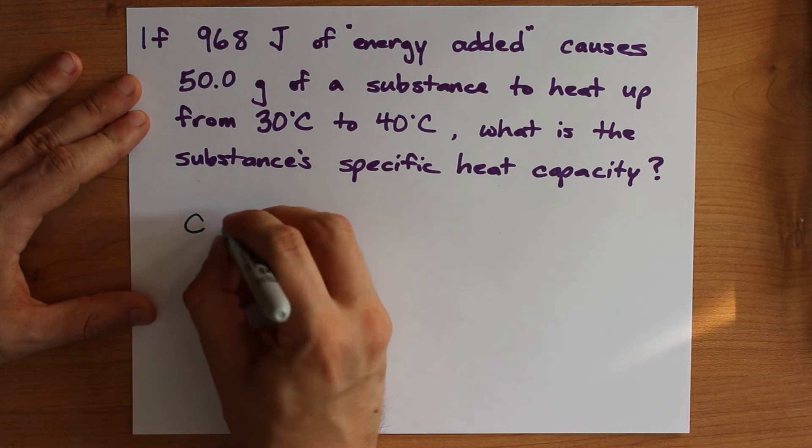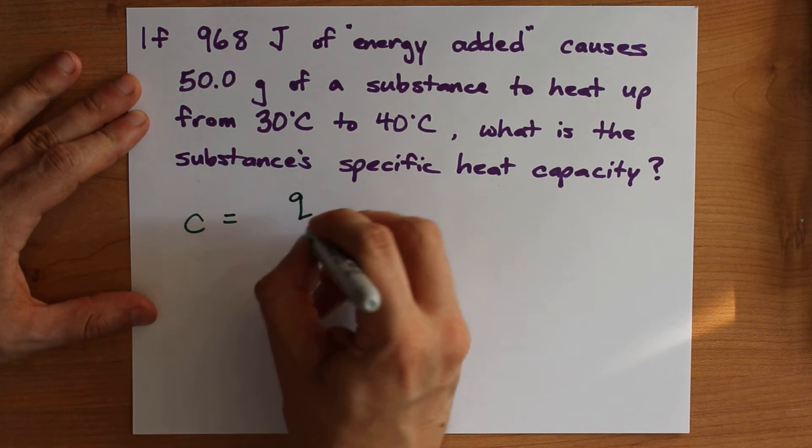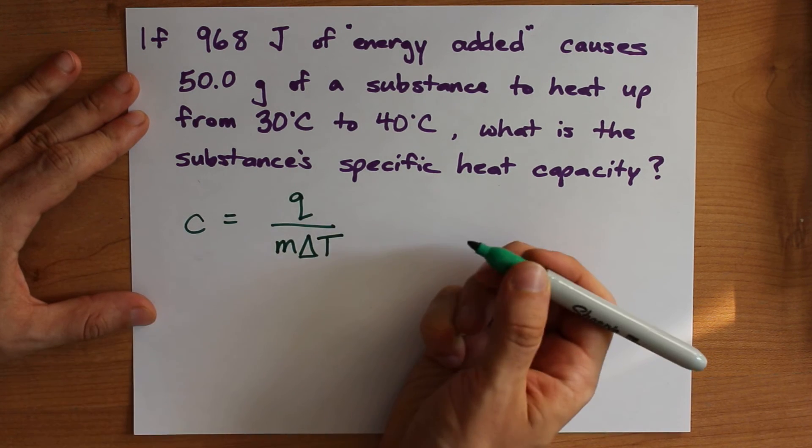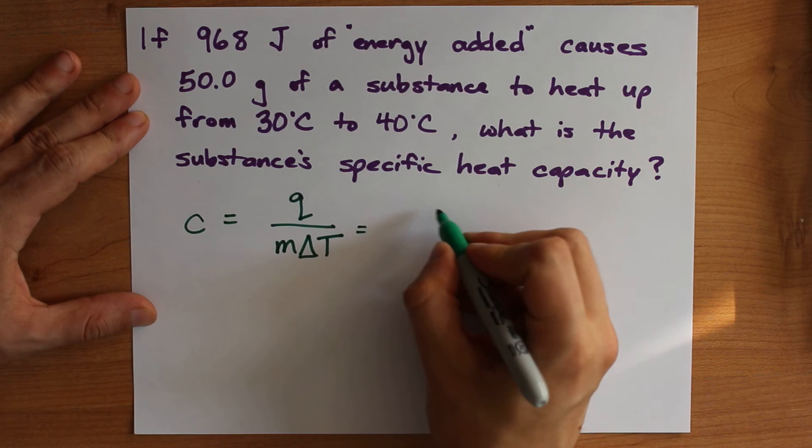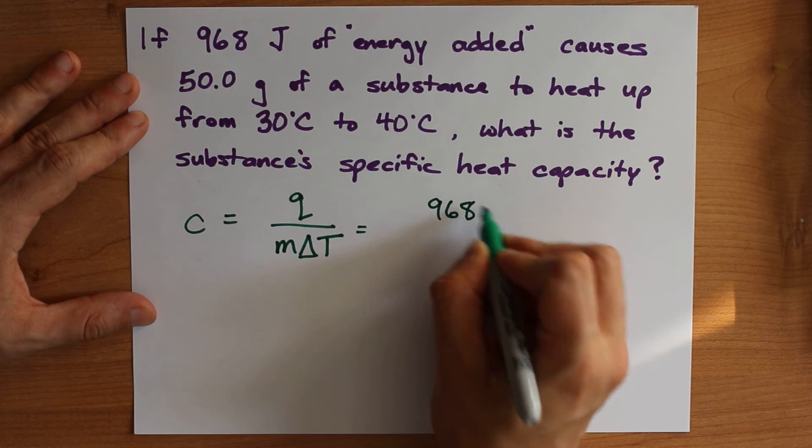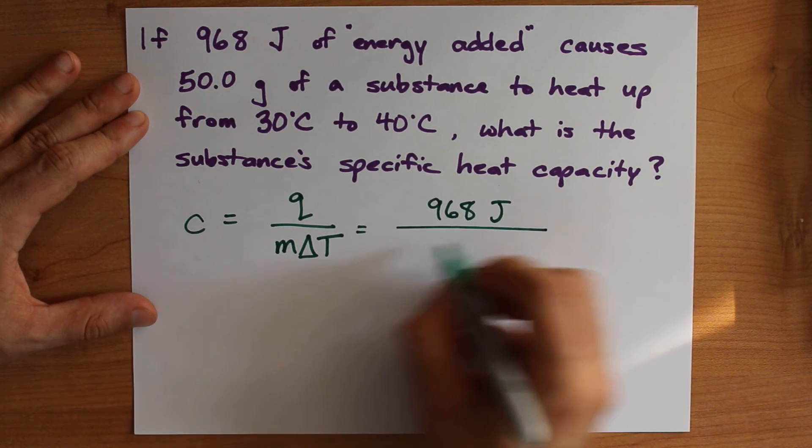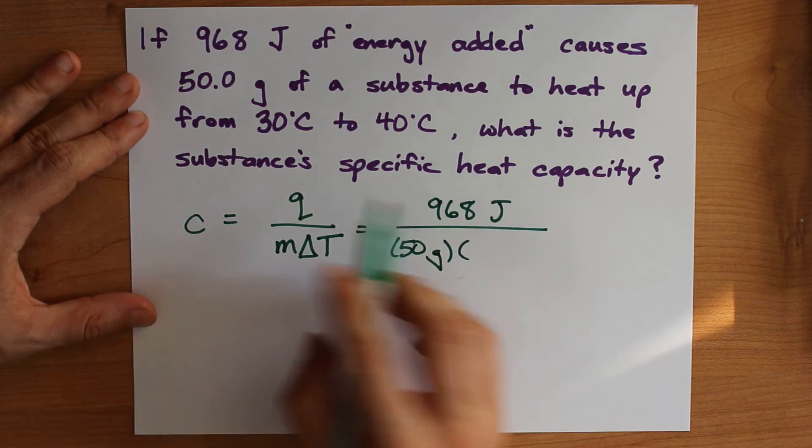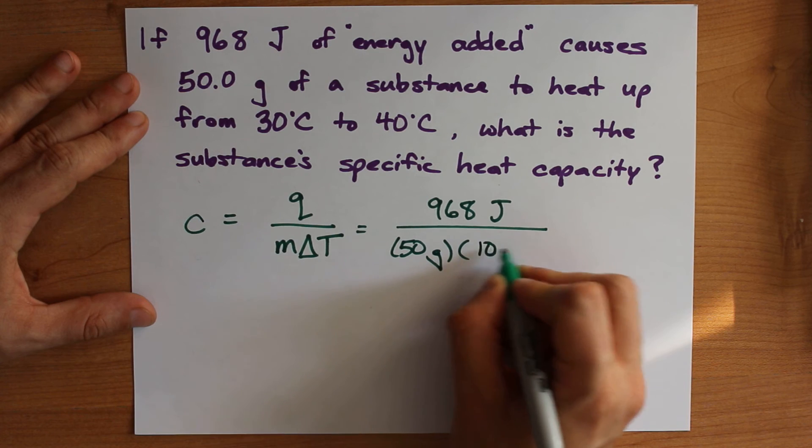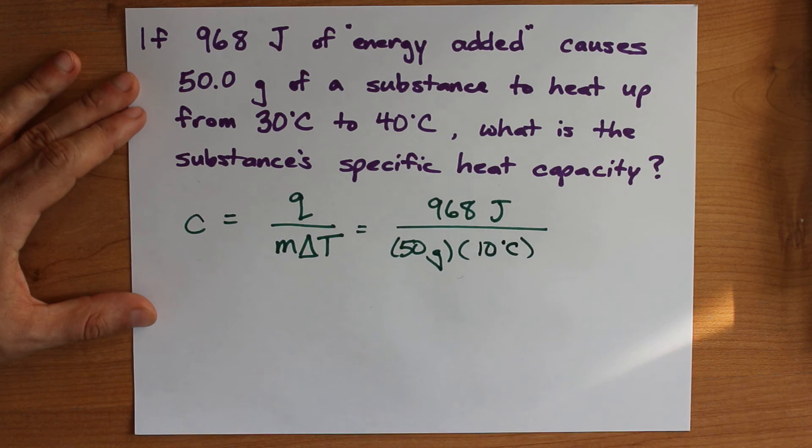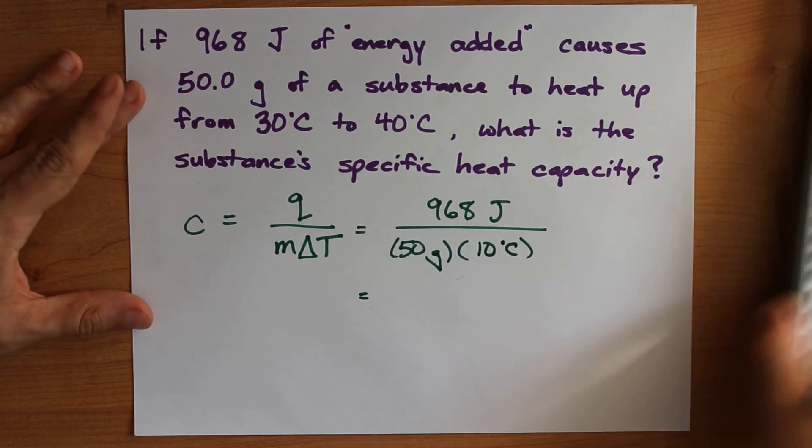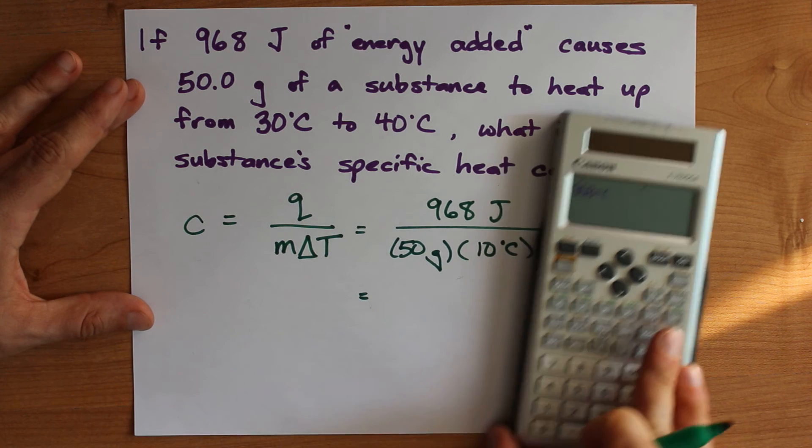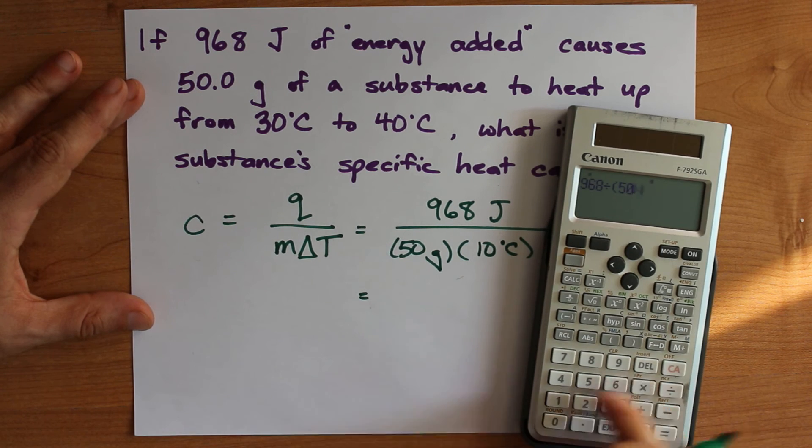Well, we can solve for c in q equals mc delta t by dividing q by m and delta t. So the amount of energy here is 968 joules. The mass was 50 grams and the delta t is from 30 to 40, so that is positive 10 degrees celsius. Now let's do that on the calculator. I get 968 divided by open bracket 50 times 10.